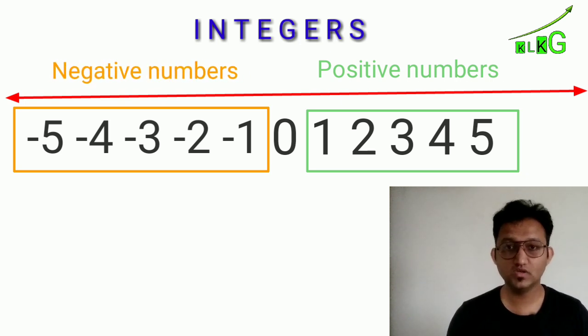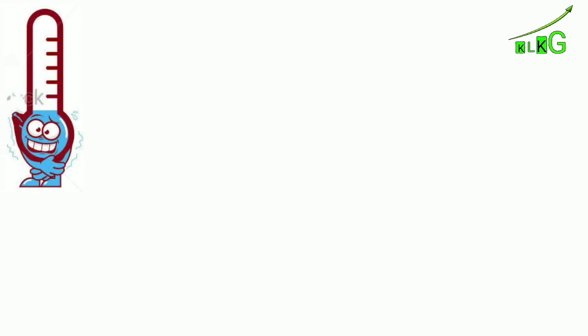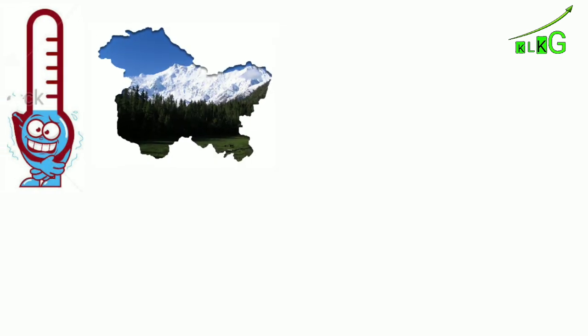As we move to the left side, the number decreases. As we move to the right side, numbers are increasing. For an example, if we say that the temperature of Kashmir in the month of January is minus 8 degrees.